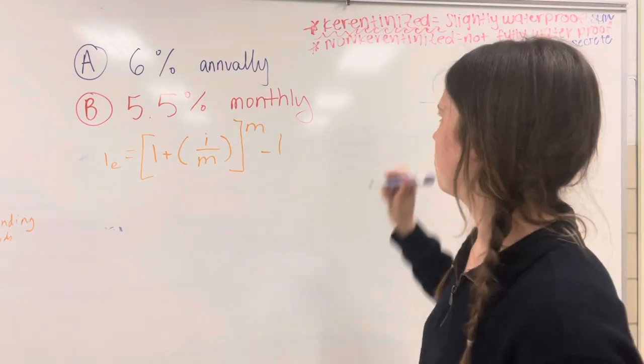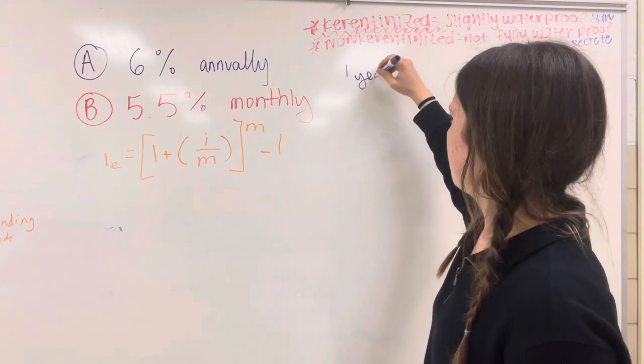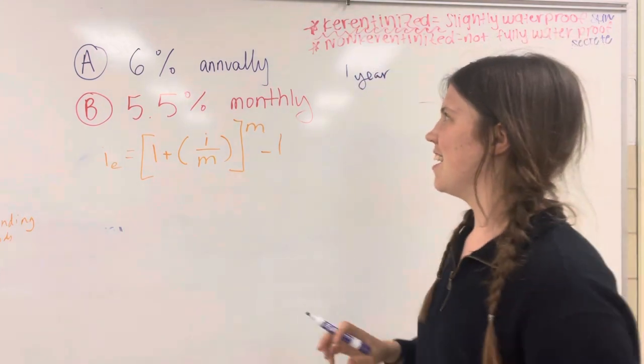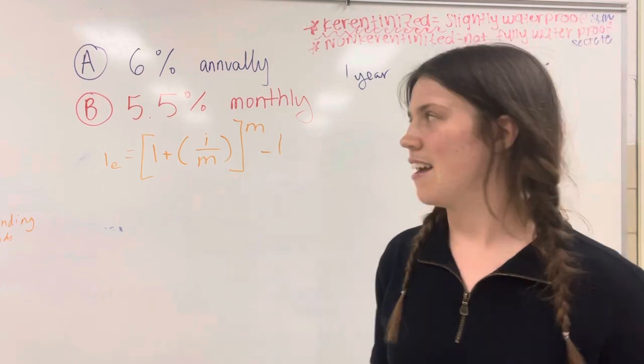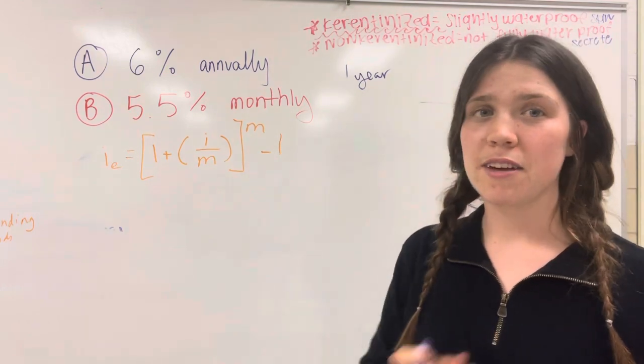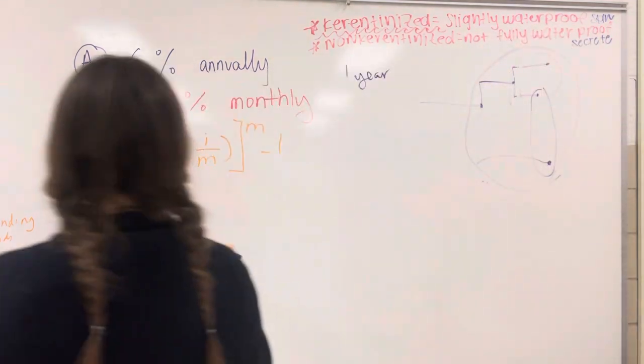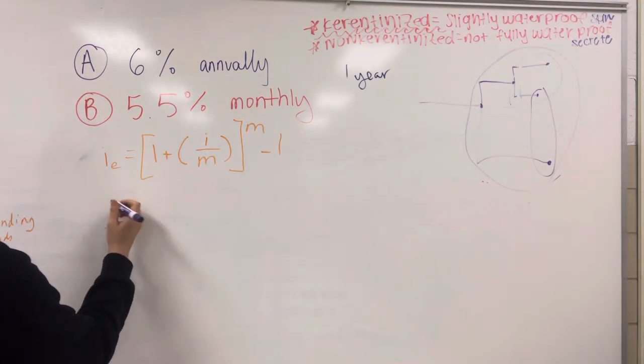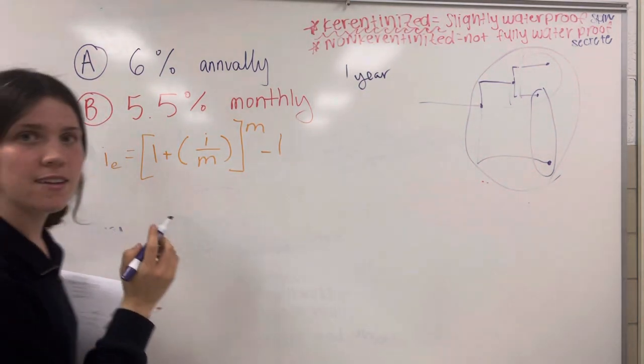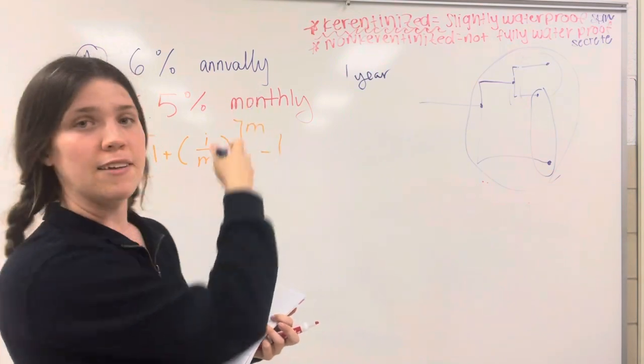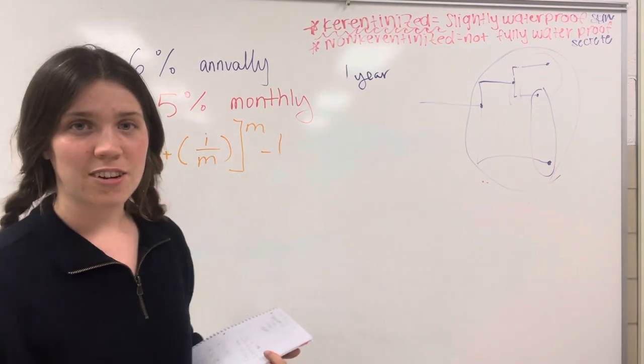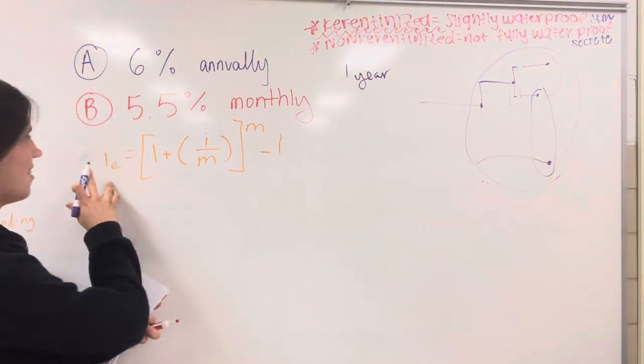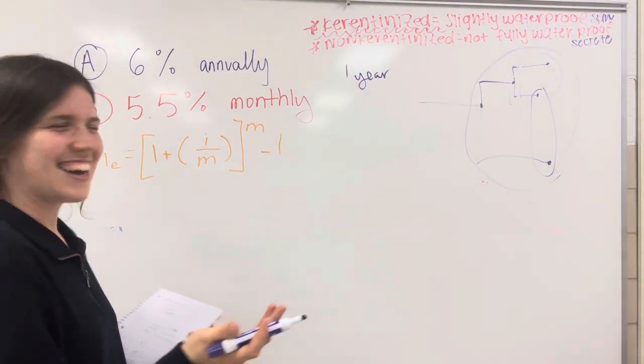So let me just write one year so we know. And you might be able to guess this is going to turn out to be 6%, but let's just do the math anyway. This is the formula we're going to be using. And this formula is going to put these two on even playing fields. The correct term for it is effective interest rate, but you can just refer to it as IE.